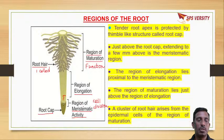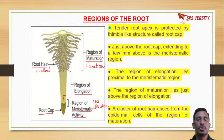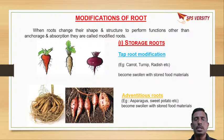So the regions of the root from the apex are: region of meristematic activity - where continuous cell division takes place; region of elongation - where elongation of new cells occurs; and region of maturation - where maturation takes place after elongation. Roots perform normal functions like absorption of water and minerals and giving anchorage.